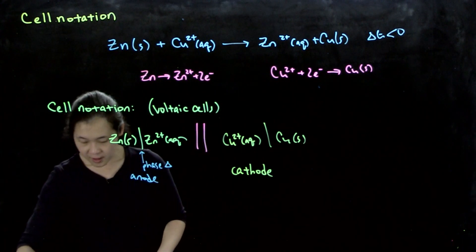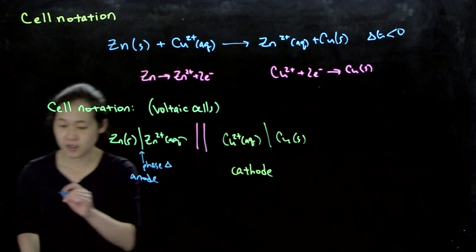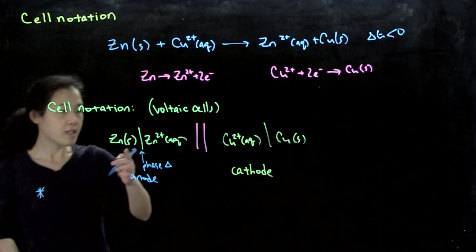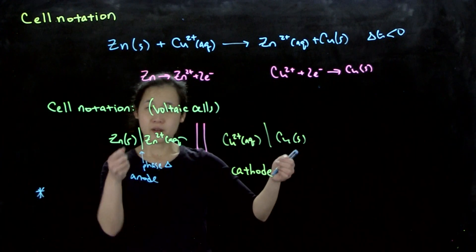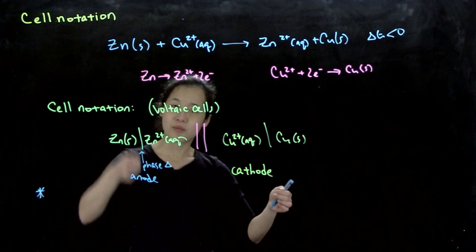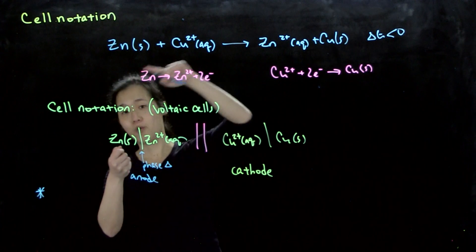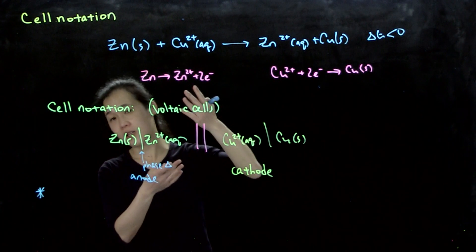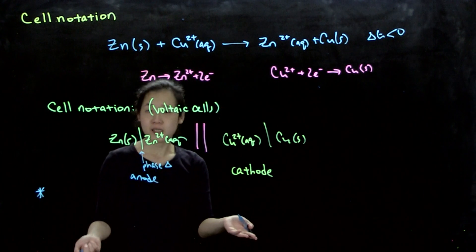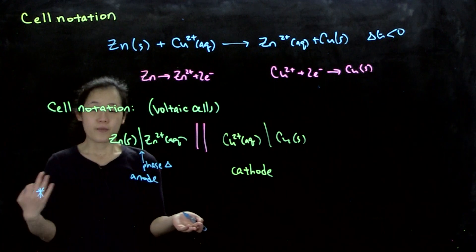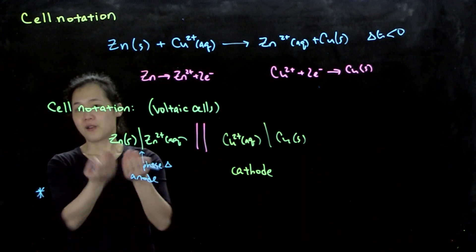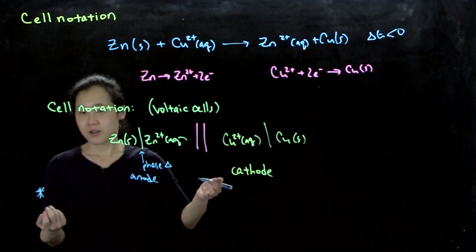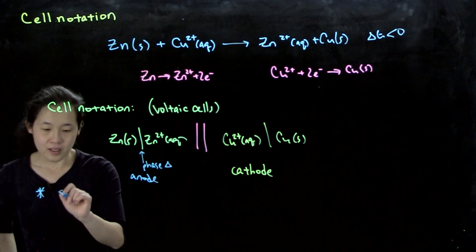Some additional notes: in this particular cell we're using our metals as electrodes - hooking up a zinc bar and copper bar by a wire with a voltmeter in between. Sometimes our redox couple is not a metal, so it's not conducive to hooking up as an electrode. So we